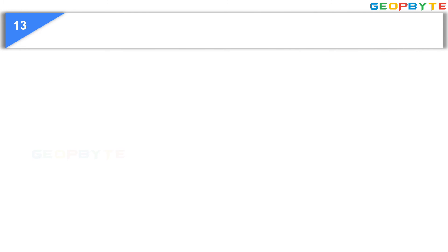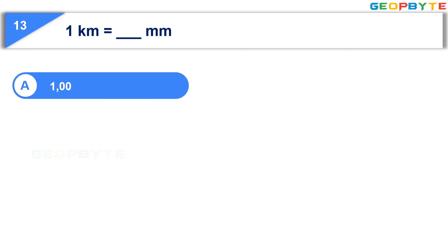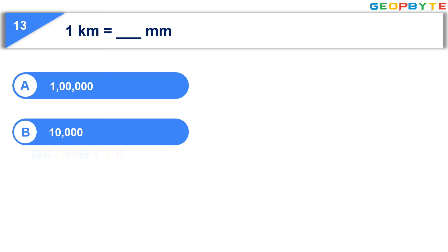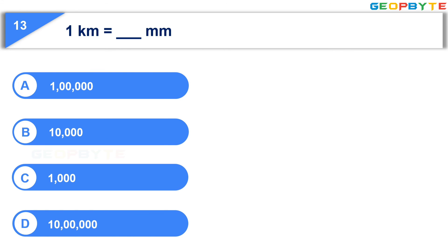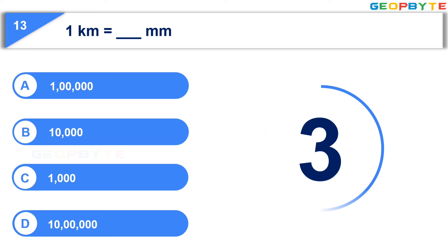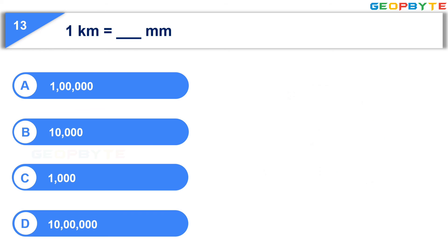The thirteenth question is: One kilometer is equal to how many millimeters? Option A: one lakh, Option B: ten thousand, Option C: one thousand, Option D: ten lakhs. Your time starts now. Your time is up and the correct answer is Option D: ten lakhs.